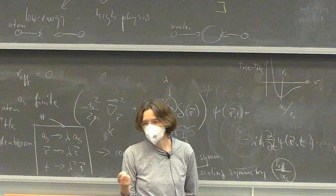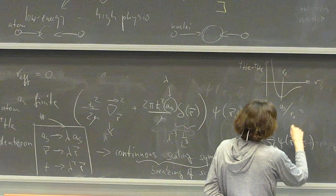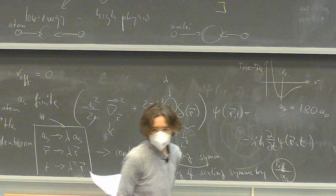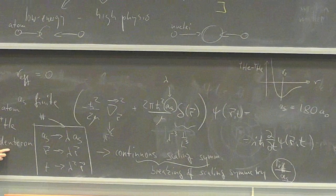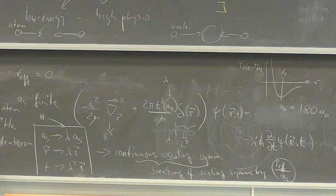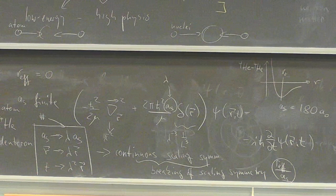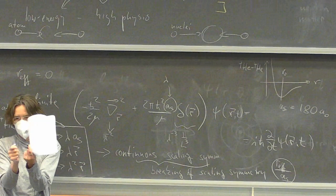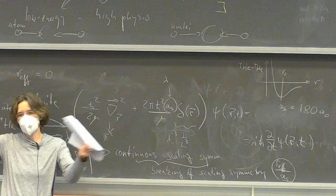The S-wave scattering length in some units — using the range and minimum of the potential to set the scale — has a particular value, of the order of 180 a_0 for helium atoms. For the deuteron, the scattering length might be of the order of 17 fermi. The scaling parameter connects systems: if I have my balloon at the scale of a few fermi I can blow it up — it's still describing the same thing at a much larger scale.